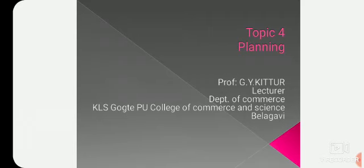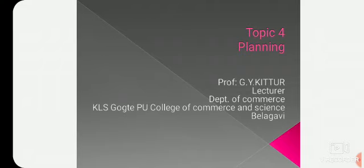Before going to know the various aspects about planning, we have to understand what is the weightage given for this chapter, that is, marks allocation. In your exam, from this chapter, Section A you will get one question for one mark, one question from Section B for two marks, one question from Section C for four marks, and no question will be asked from Section D.